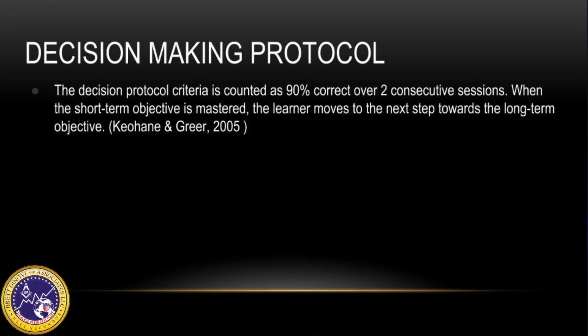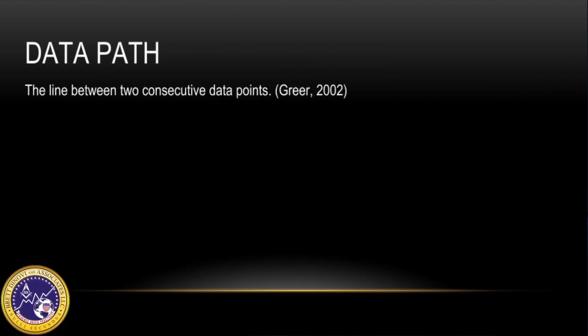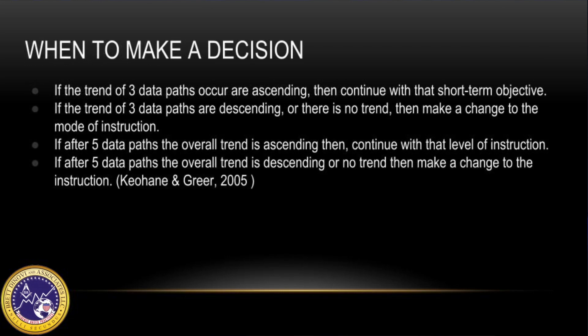The decision protocol criteria is counted as 90% over two consecutive sessions. When a short-term objective is mastered, the learner moves to the next step towards the long-term objective. A data path is aligned between two consecutive data points. If the trend of three data paths is ascending, the decision is made to continue with that short-term objective.